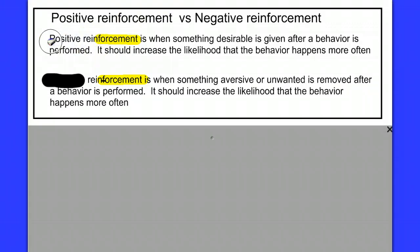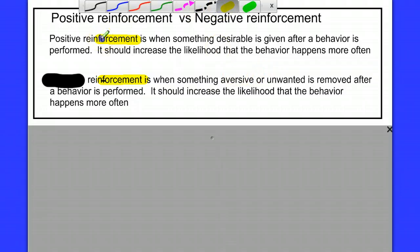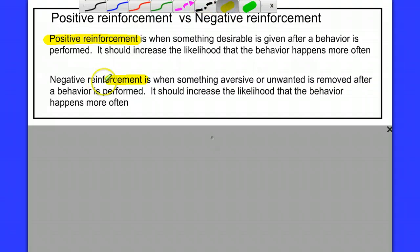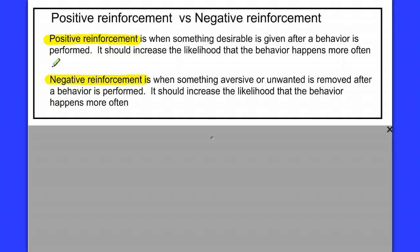Positive reinforcement is when something desirable is given after a behavior is performed. Let's say you study really hard and you get to go out for ice cream — the ice cream is the consequence that should increase the likelihood of that behavior. Negative reinforcement is the removal of something you didn't want anyway. Let's say you study well and as a result you don't have to take out the trash for a week. Something was taken away, and in taking it away, it probably reinforced the behavior.